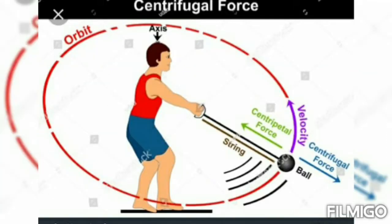Centripetal force: a boy holds a rope with a small stone tied at one end and rotates it so the stone follows a circular path. A pushing force acts away from the center — this is called centrifugal force. Force acting on a body away from the center of a circular path is called centrifugal force. The centrifugal force acts in a direction opposite to the direction of centripetal force.